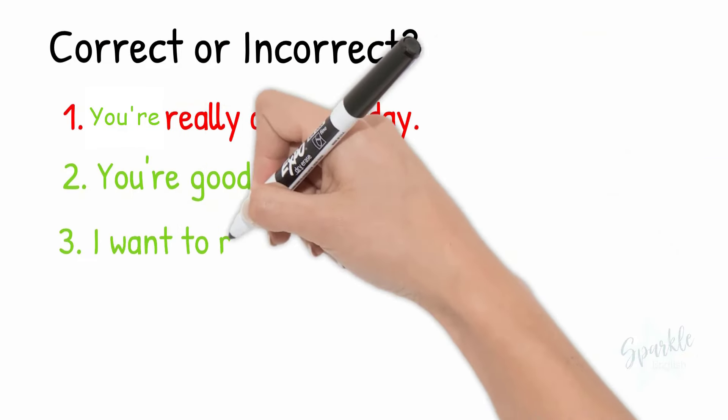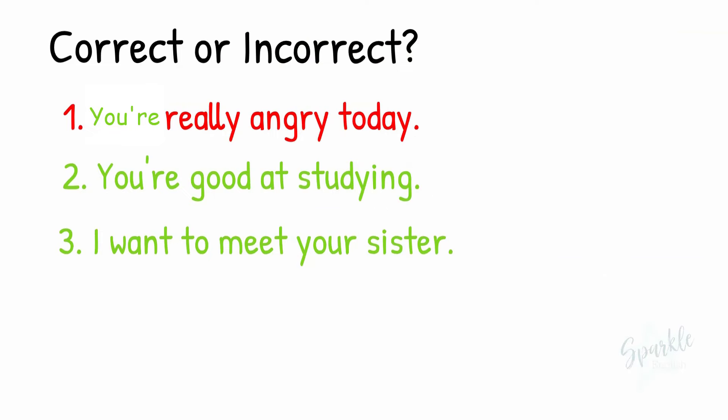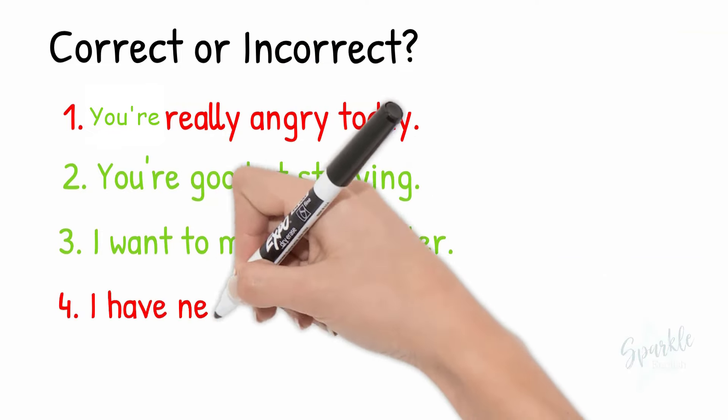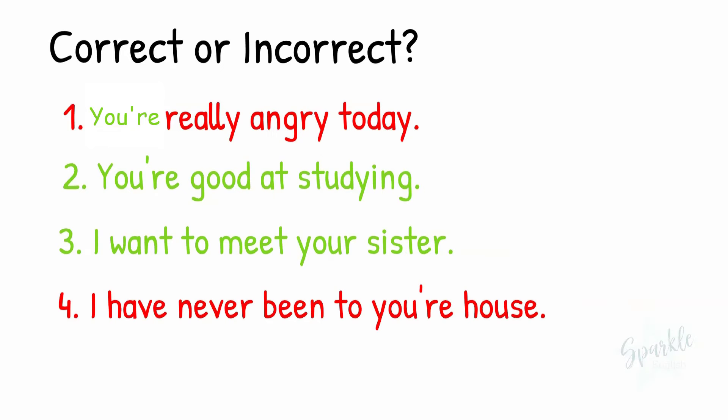Numbers two and three are correct. Number four should be Y-O-U-R without an apostrophe plus R-E. This is because we are talking about someone's house. We are not calling them a house.